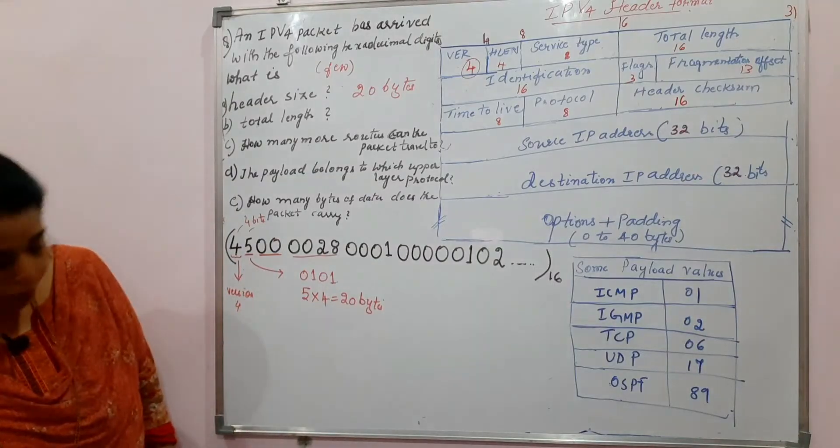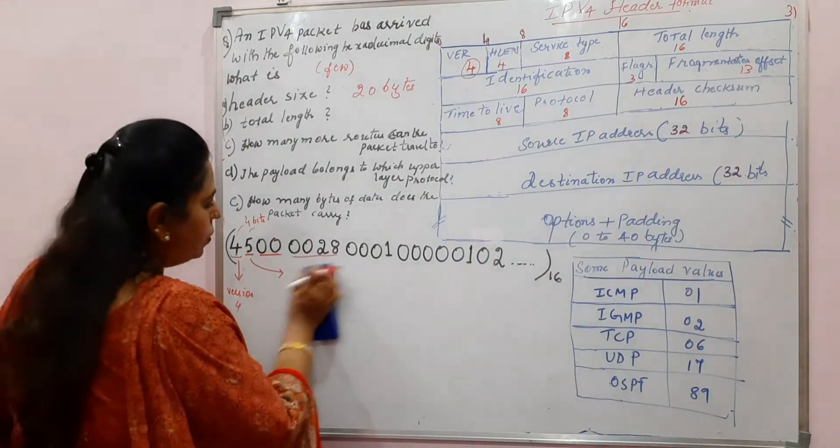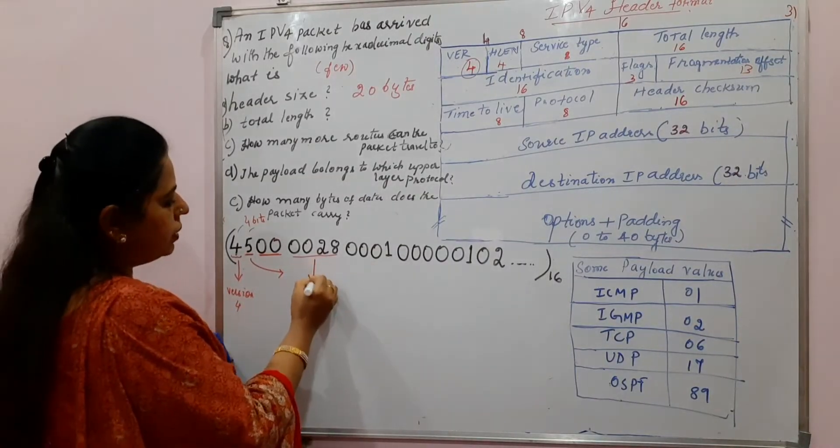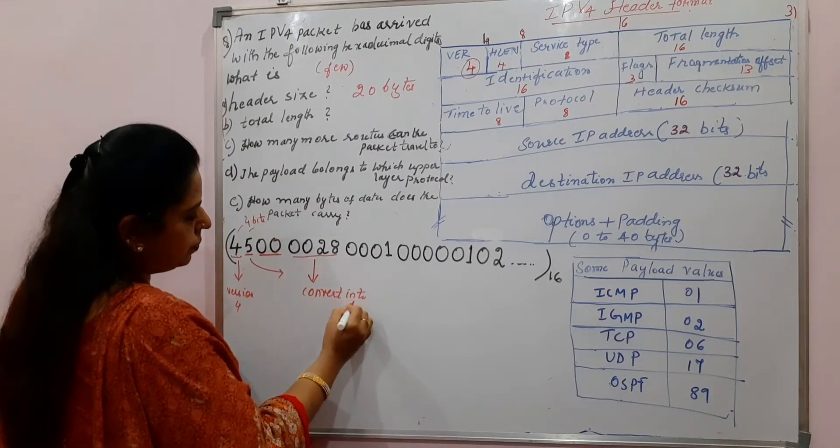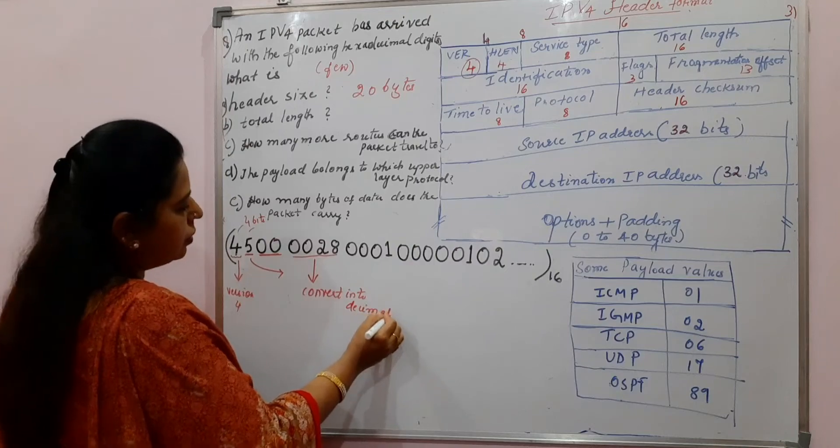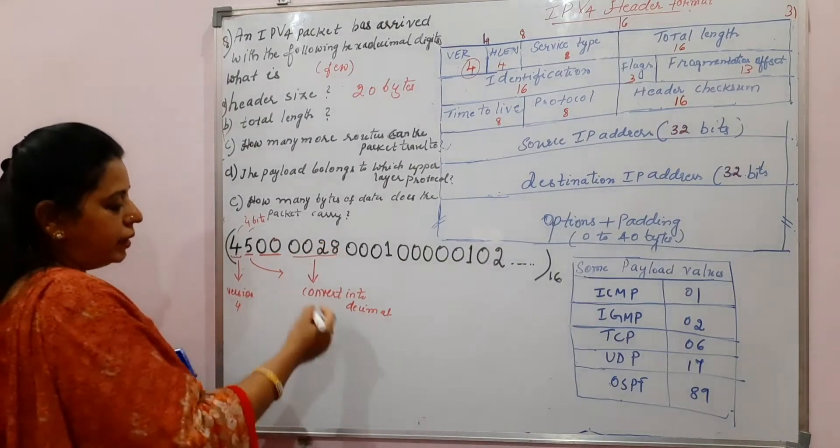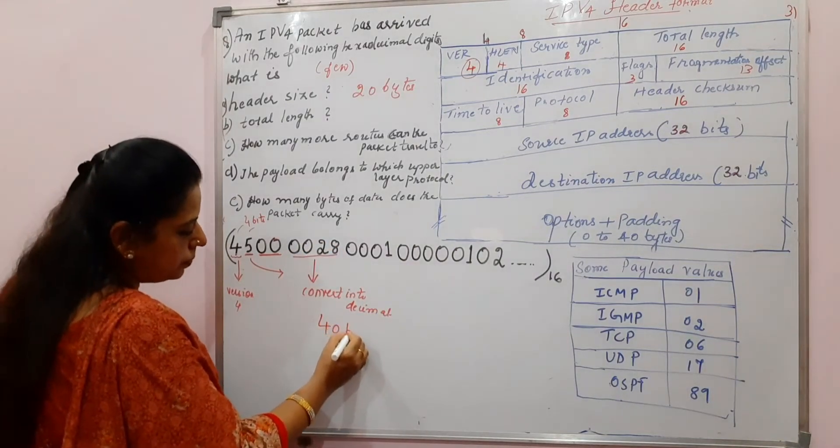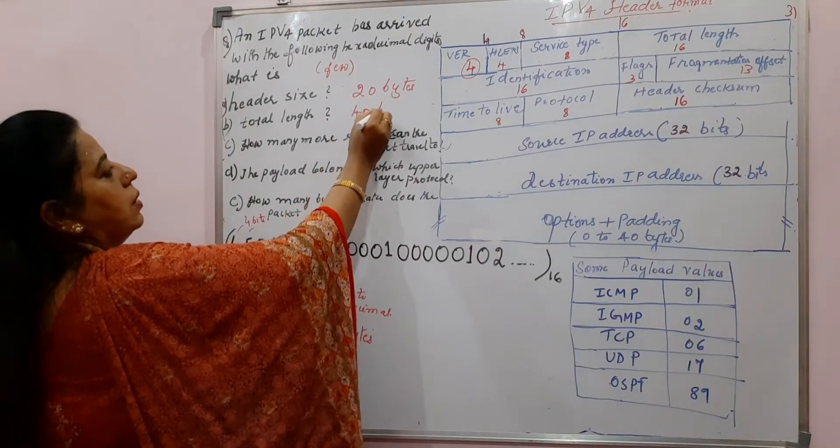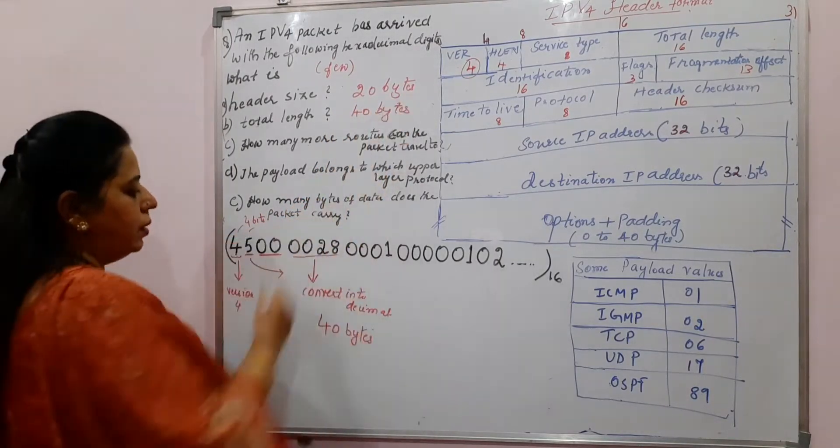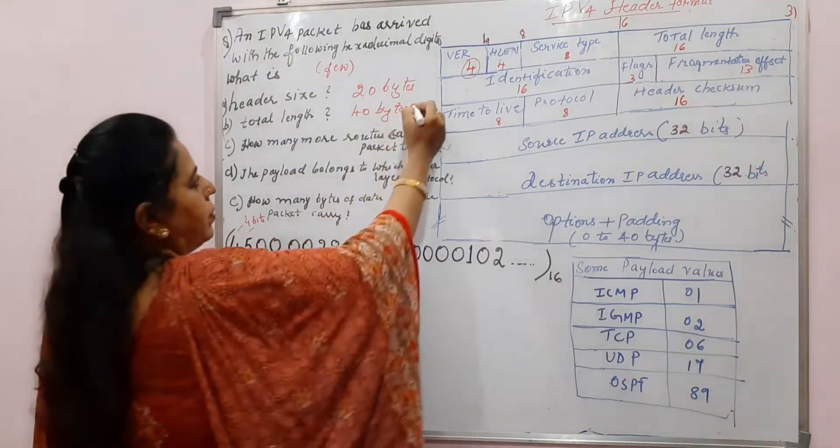0028 is in hexadecimal. Convert it into decimal. Convert this into decimal. The value for this 28 in decimal is 40 bytes. You can write here the answer as 40 bytes. This also you have answered now.